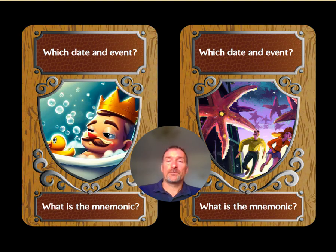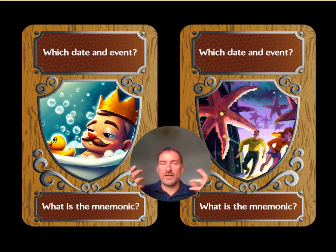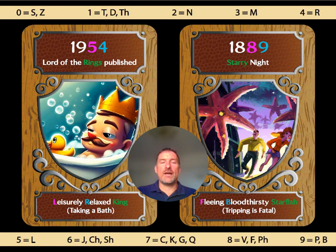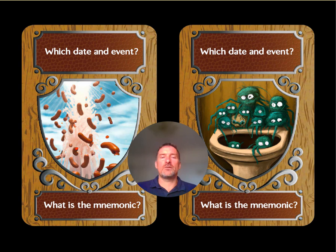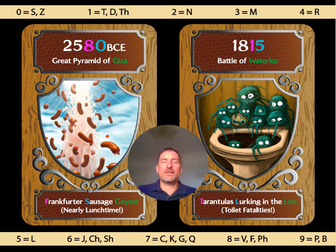Can you remember the mnemonic phrases for these images to help you remember the dates? We've got 'leisurely relaxed king taking a bath' — and 'fleeing bloodthirsty starfish, tripping is fatal.' And here are two more from earlier: you've got the frankfurters on one side and the tarantulas on the other. 'Frankfurter sausage Giza' on one side and 'tarantulas lurking in the loo' on the other — encoding Waterloo and the Pyramids of Giza.